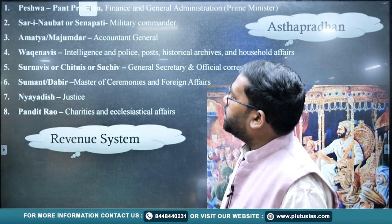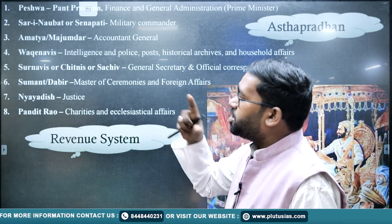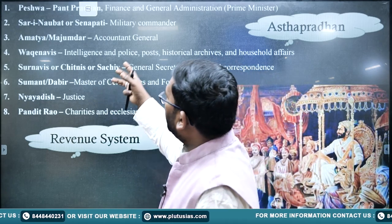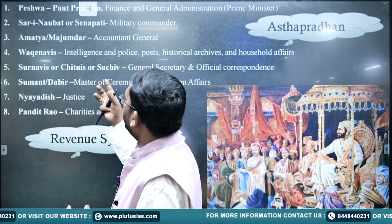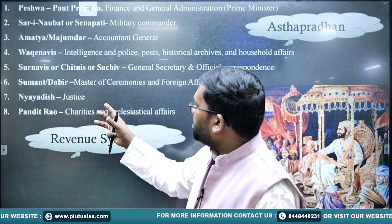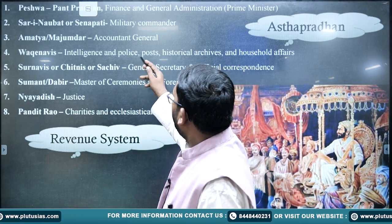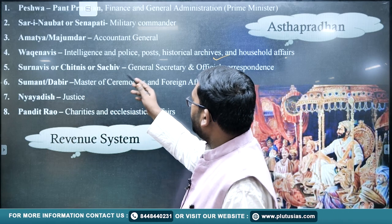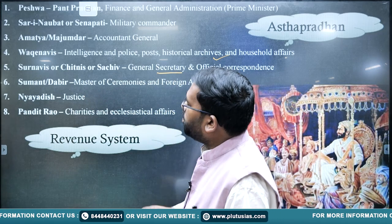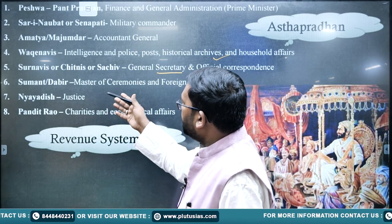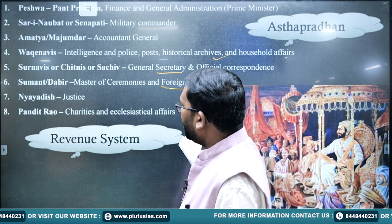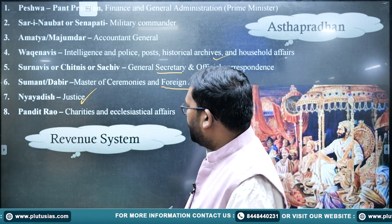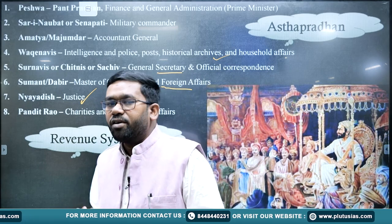The first official in the Ashtapradhan was the Peshwa, who served as the Prime Minister. Then we have the Sar-i-Naubat (Senapati), Amatya or Mazumdar (finance minister), the intelligence and police department official, Sachiv or Chitnis (secretary for correspondence), Sumant or Dabir (master of ceremonies and foreign affairs), Nyayadhish (justice), and Pandit Rao (head of charities and religious affairs).